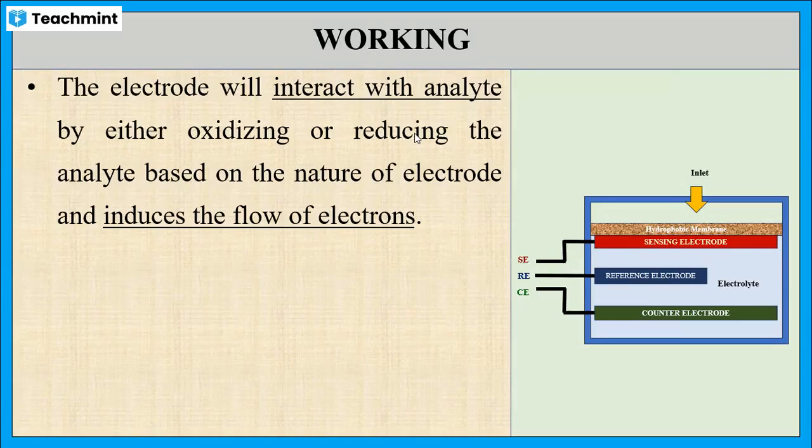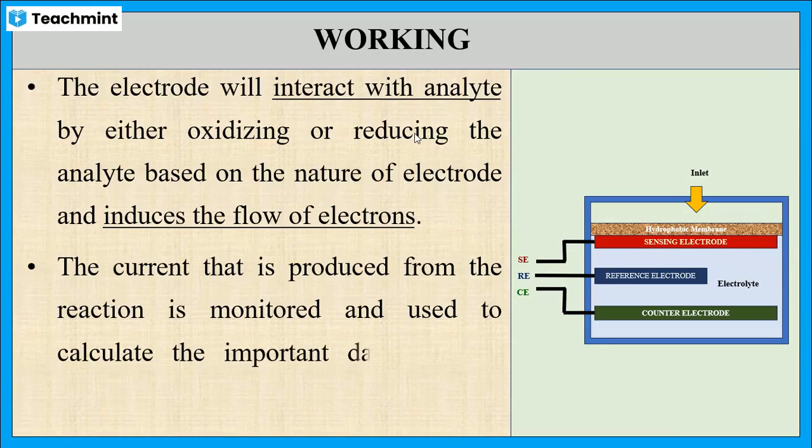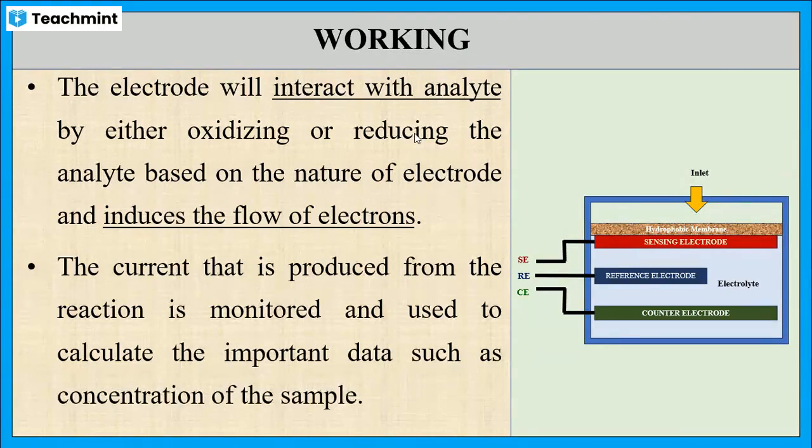Or if it is a cathode, it undergoes reduction, which enables the flow of electrons. The current thus produced is measured to determine the important data of the analyte, such as concentration of the sample.